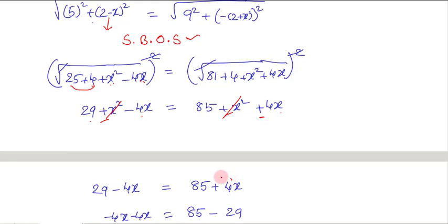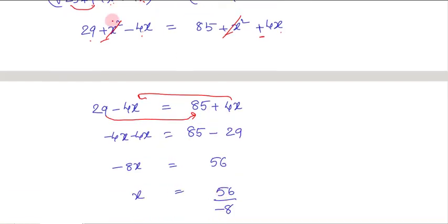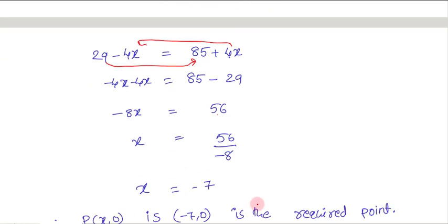Transporting 4x to the other side, it becomes negative 4x, and transporting 29 to the other side it becomes negative 29. So we get: minus 4x minus 4x equals 85 minus 29, that is minus 8x equals 56. Therefore x equals 56 divided by minus 8.